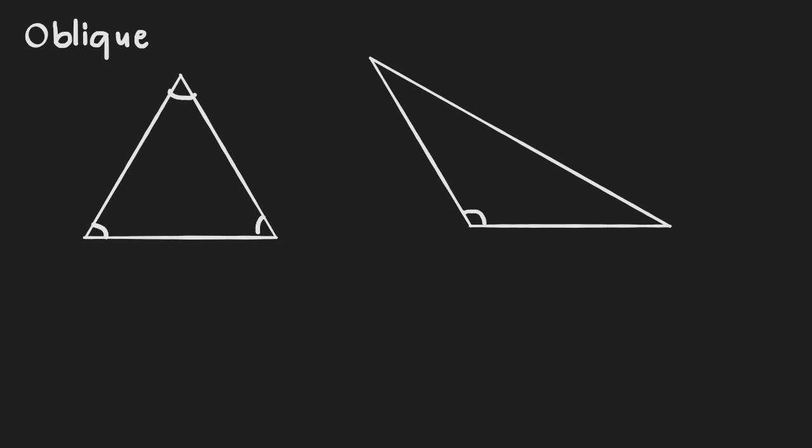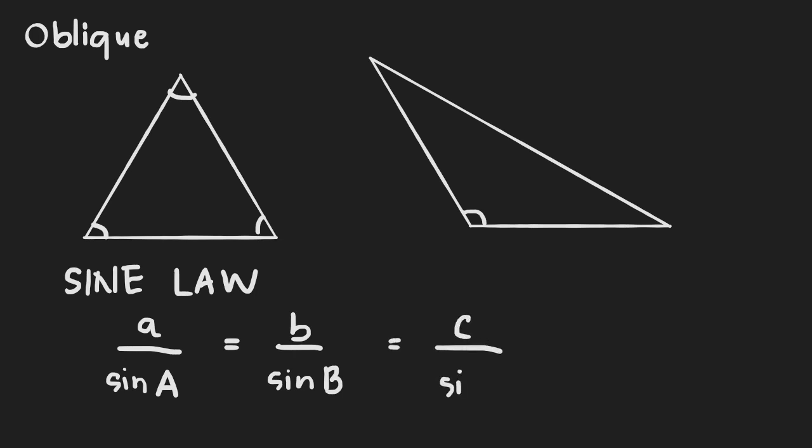Our first lesson is solving oblique triangles using the sine law. The sine law states that a divided by sine of A is equal to b over sine of B is equal to c over sine of C. So what are A, B, and C?